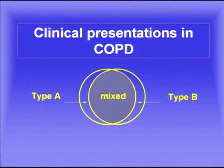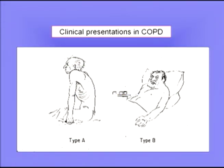Now let's talk about the clinical presentations in COPD. The vast majority of patients have a mixed presentation, but there are interesting extremes called Type A and Type B. The Type A patient is typically a rather thin person, desperately short of breath. He is very dyspneic because his ventilation is high, and his high ventilation allows him to maintain an almost normal arterial PO2 — never completely normal — and his PCO2 will be normal. But he will be desperately short of breath.